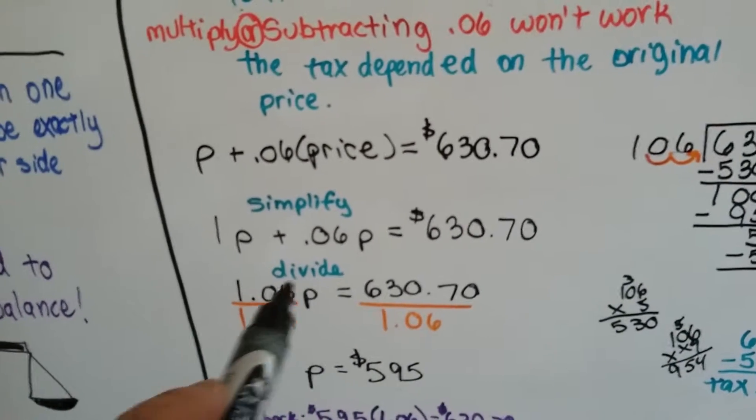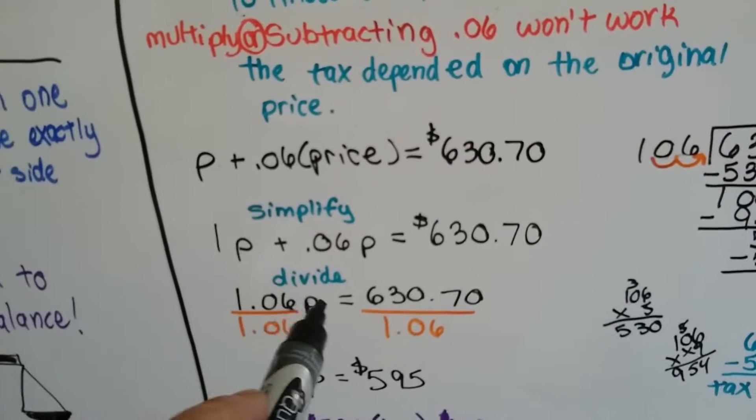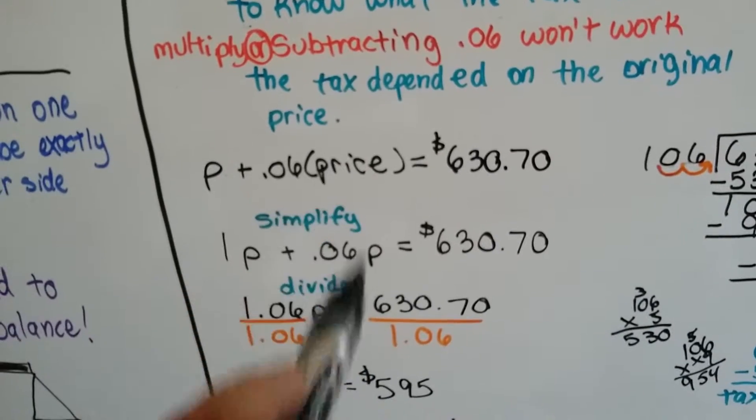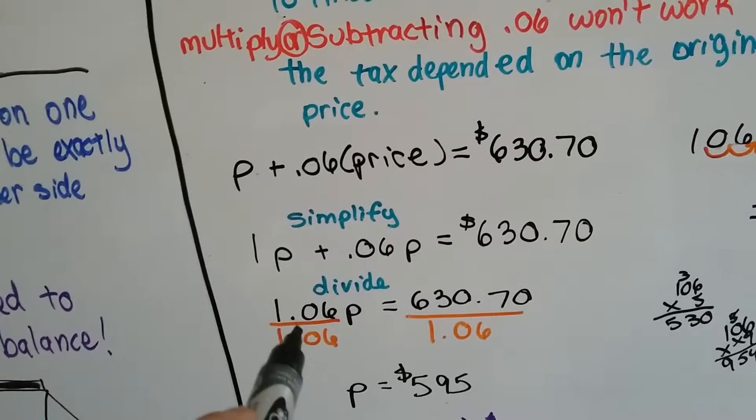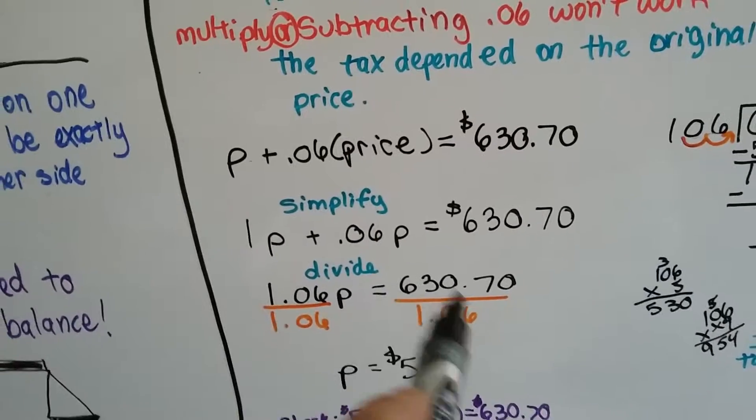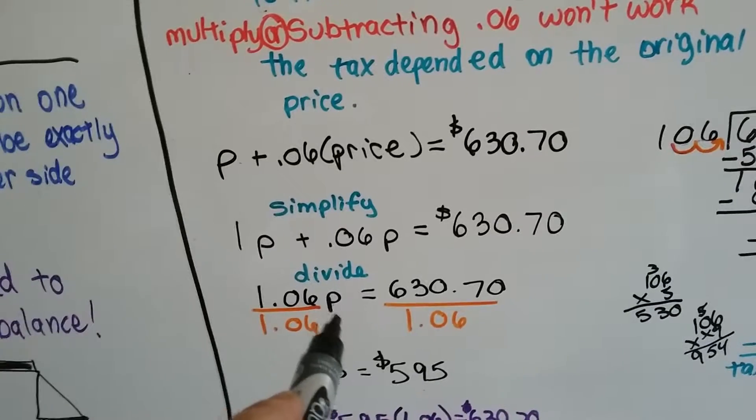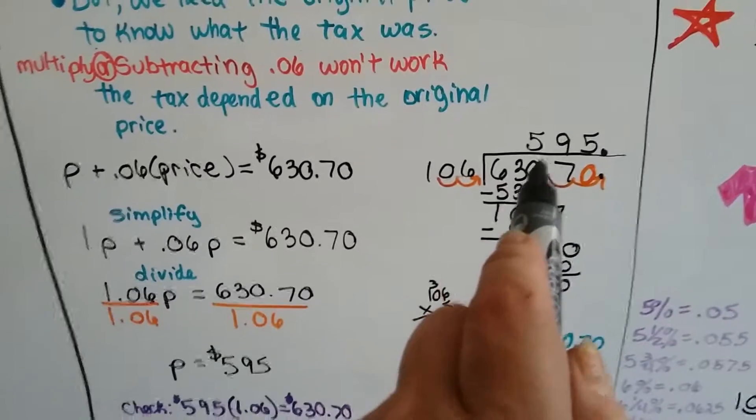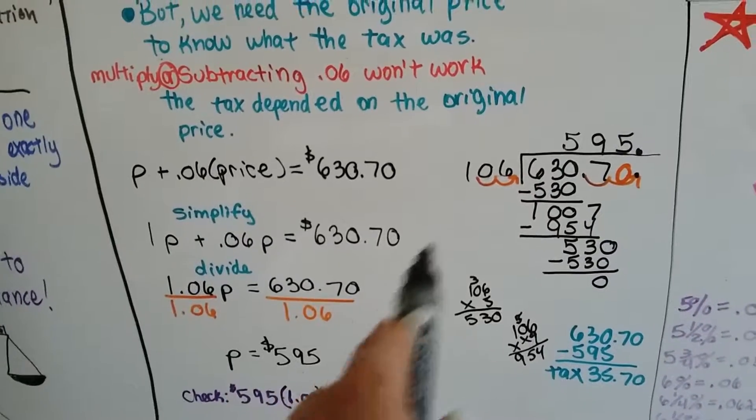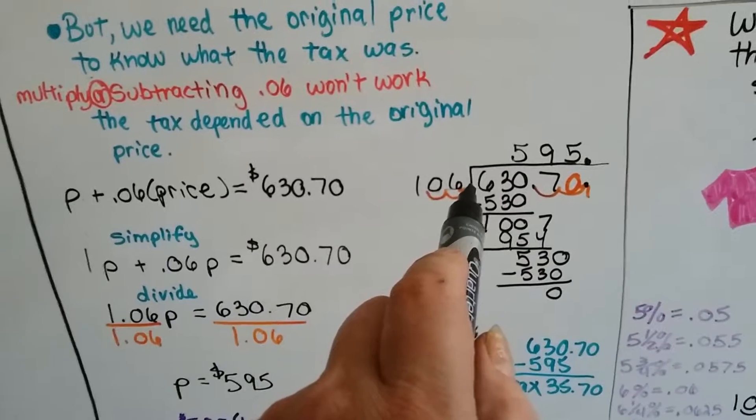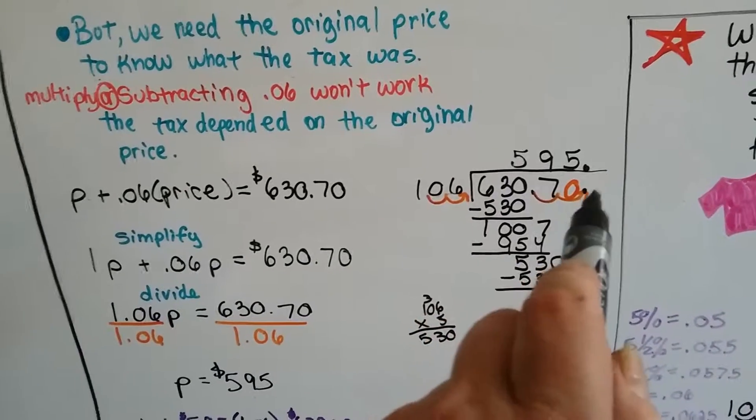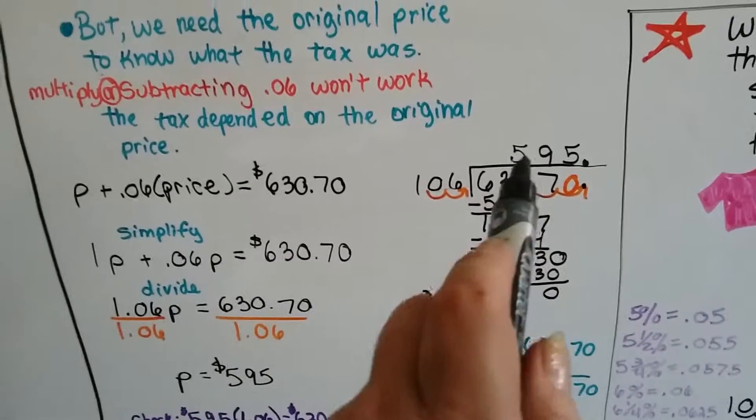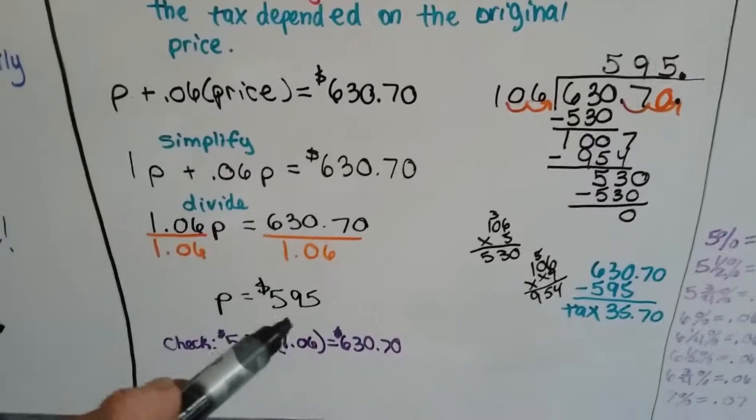So now knowing that the 1.06P means multiply it by P, because we need to multiply it by the sales tax percentage to get the amount of sales tax. We need to divide because that's the opposite of multiplication. So we're going to divide both sides by 1.06 to get that P isolated to stand alone. And when we do divide $630.70 by 1.06, remember we have to move the decimal point over when we're dividing with decimals. That means we have to move the decimal point over in the dividend also and it goes straight up. When I do the division, I come up with $595. So I know the price of the bed was $595.